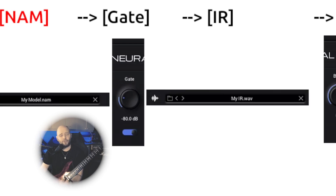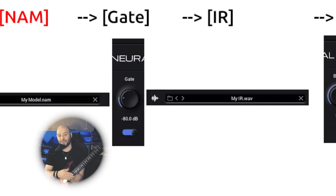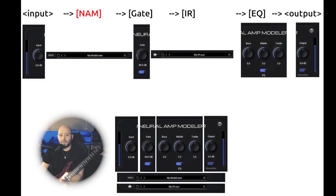The gate is placed after the NAM because NAM is neural network-based. Even when you have basically zero input, it can produce a little bit of noise, which is why it's better to have the gate after the NAM rather than before it. With a real amp, you'd usually have your gate in front of the amp, but in this case you usually have it after. Then there's just the EQ and output.